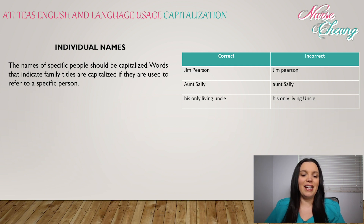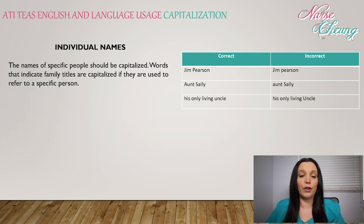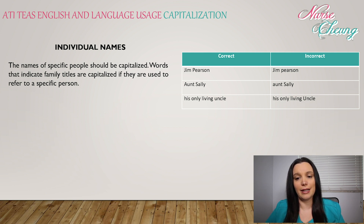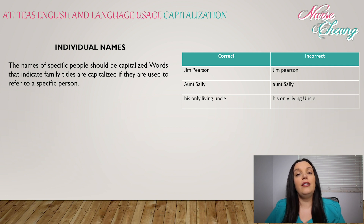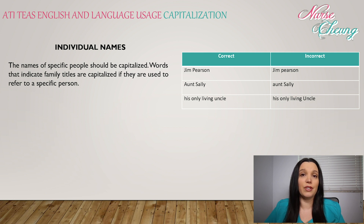Individual names: the names of specific people should be capitalized. Words that indicate family titles are capitalized if they are used to refer to a specific person. For example, 'Jim Pearsons' — both of those names should be capitalized. 'Aunt Sally' should be capitalized — both Aunt and Sally — because it's referring to a specific person. 'His only living uncle' — none of those words should be capitalized because it's not referring to a single specific person.